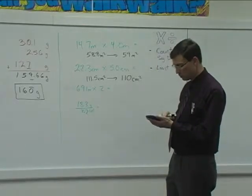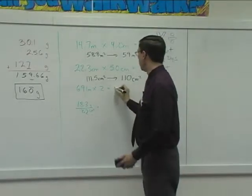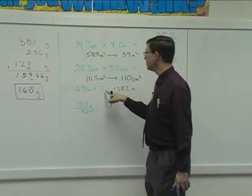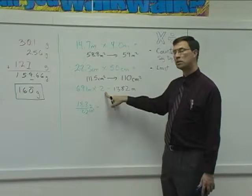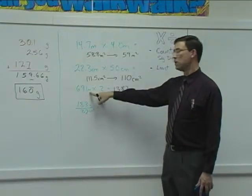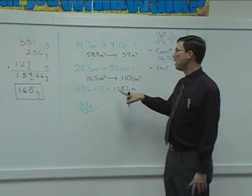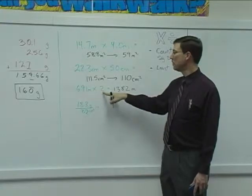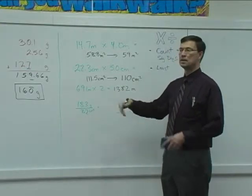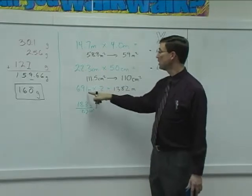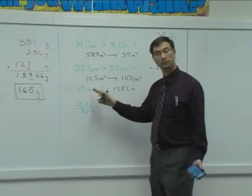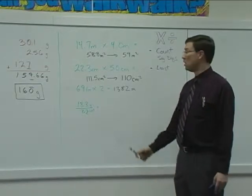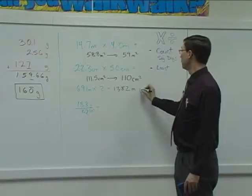And we get 1382. And notice, this one's not a measurement. This is just a plain old number, two. This has a measurement of meters. I only look at the measurements to count the significant figures. A number like two is considered to have an infinite number of significant figures. So how many significant figures here? Three. So I need to round the answer to have how many significant figures? Tommy? Three. So round that to three significant figures. What would you get?